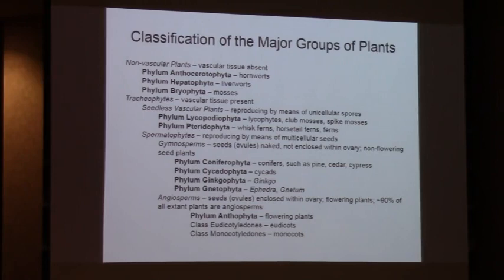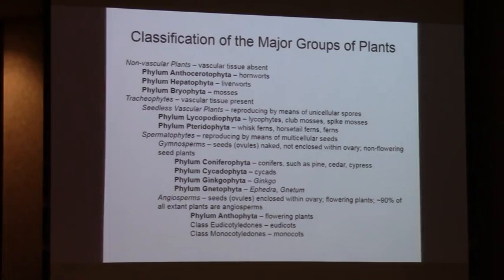We've got the non-vascular plants - they don't have xylem and flow conductive tissue. And we've got the tracheophytes, which is a 50-cent term for vascular plants. They have xylem and flow. The non-vascular plants, lacking vascular tissues, are locked into a very small body size. They don't have efficient means of conducting water and minerals and supporting a large body. The largest mosses are probably just a few inches tall - that would be a big one.